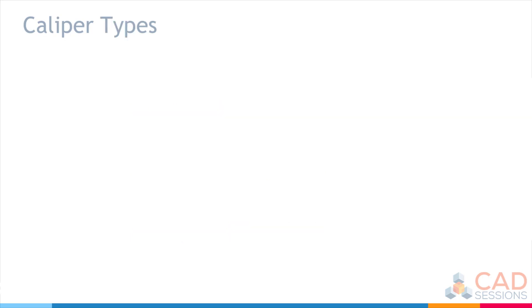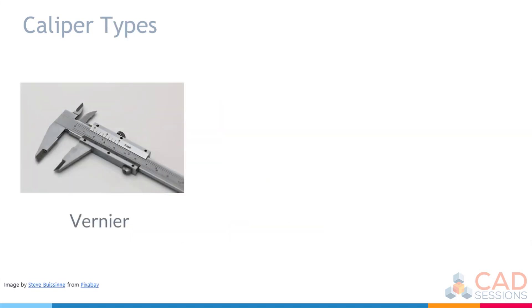There are various types of calipers. The Vernier, which is probably the most difficult to use since you need to rely on the alignment of lines to take a measurement reading.